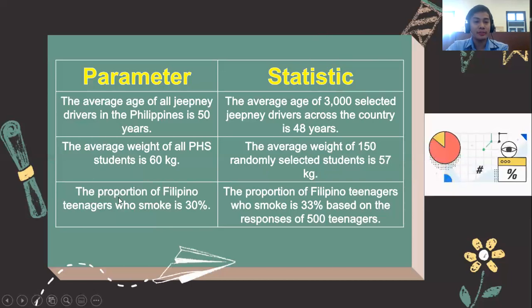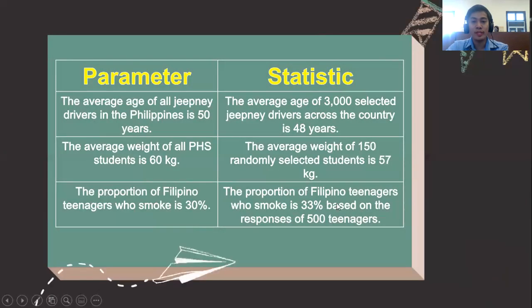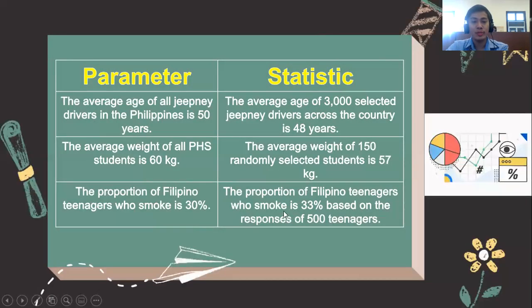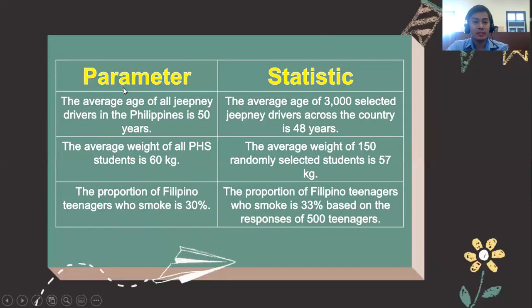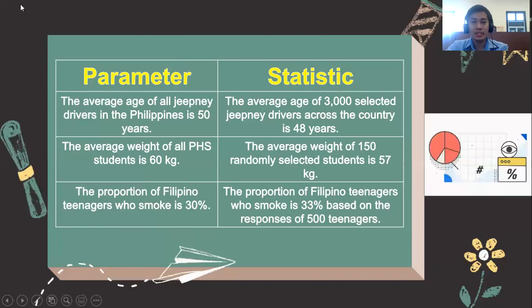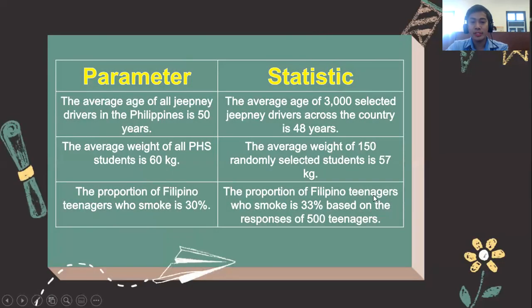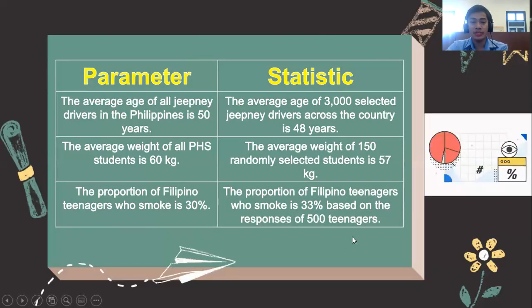Third example: the proportion of Filipino teenagers who smoke is 30%. For the statistic, the proportion of Filipino teenagers who smoke is 33% based on the responses of 500 teenagers. Notice that all Filipino teenagers are described by the parameter of this study, and the statistic is described from the responses of 500 teenagers, which is the sample.